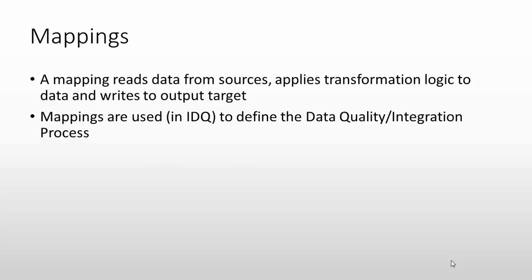A mapping reads data from sources, applies transformation logic, and writes output to a target. Whenever we say mapping, three components come into picture: source, transformation logic applied on the data, and target. Mapping is the use of a source, applying logic through transformations, and getting output in the target table. Mappings are used to define both the data quality and integration process.